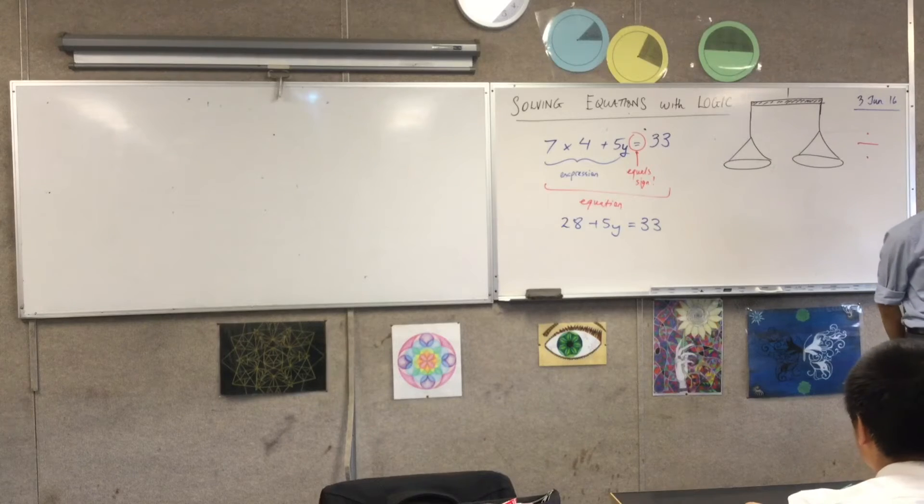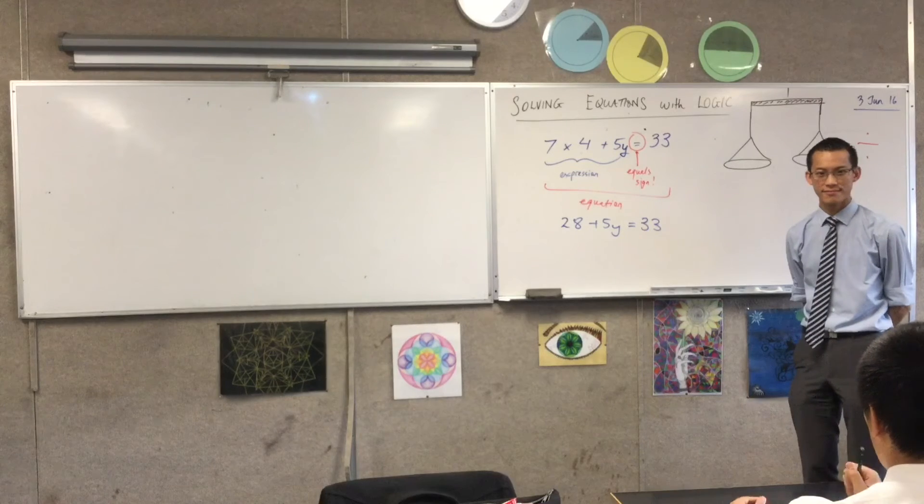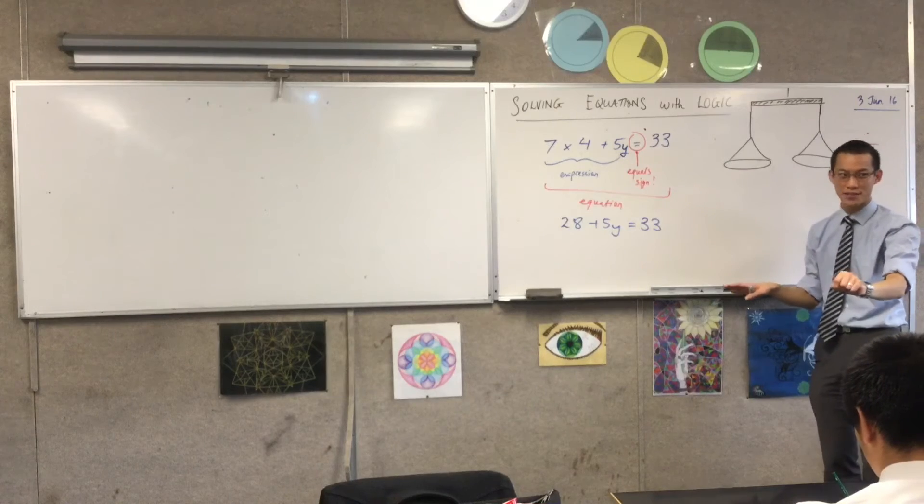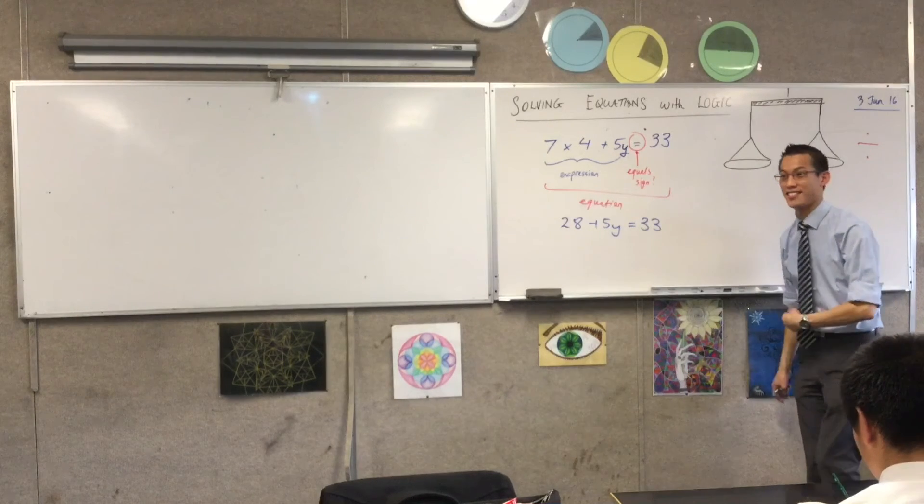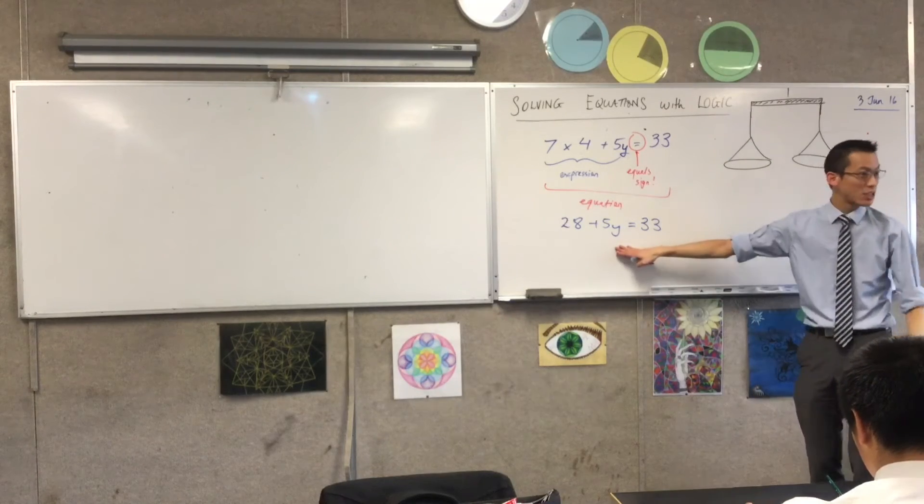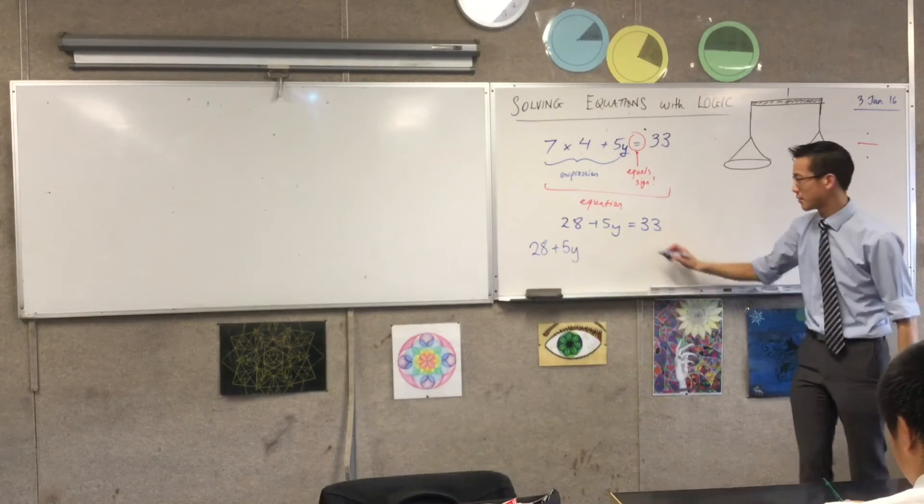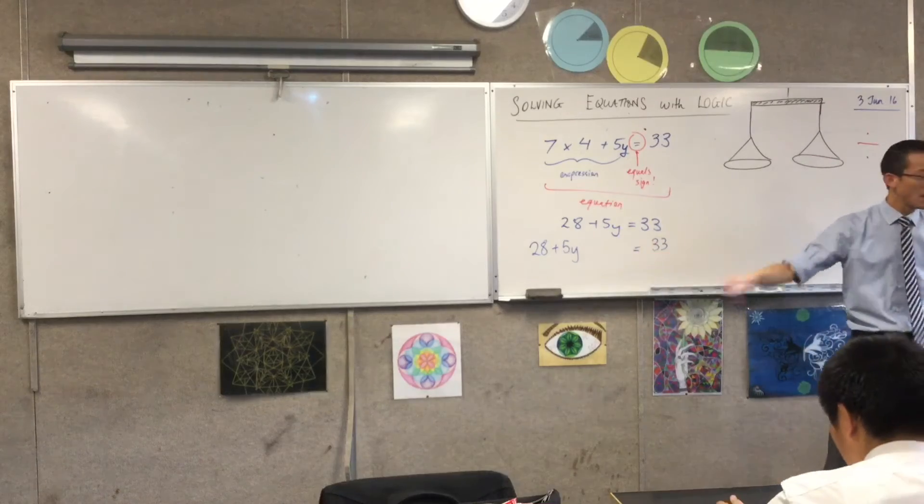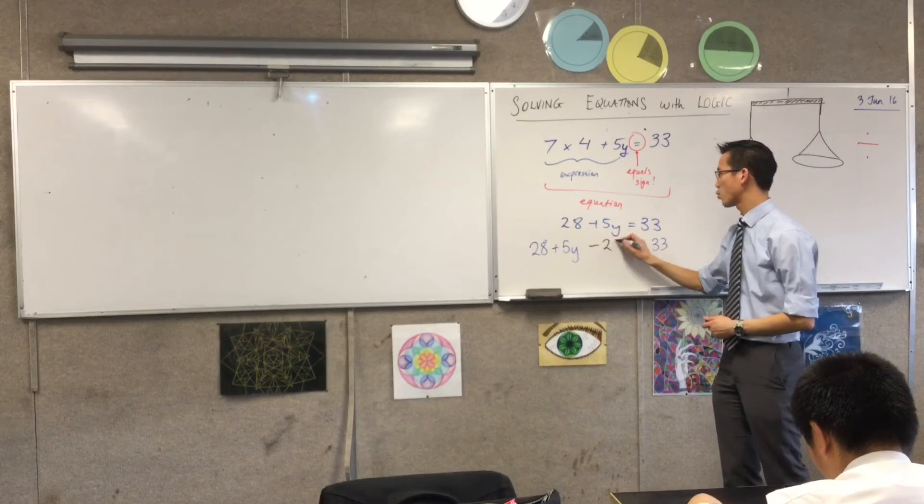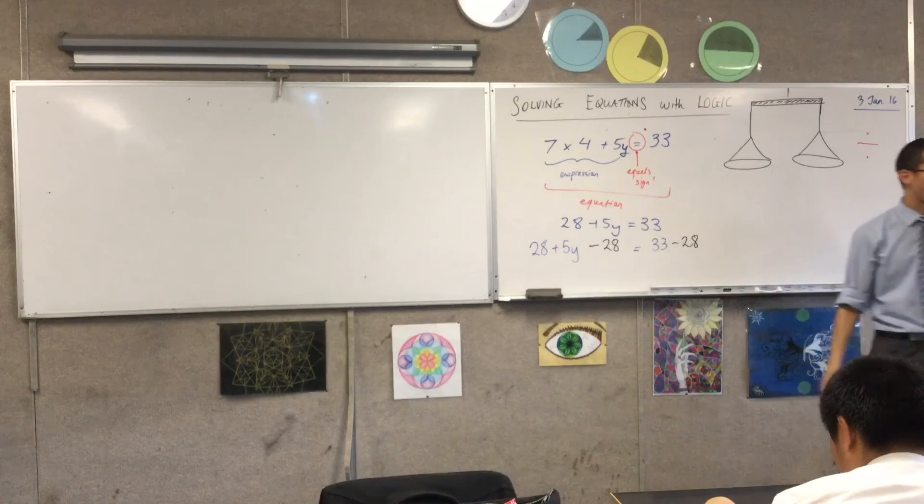What could I subtract from both sides? Any suggestions? You can minus 28 from both sides. I could subtract 28 from both sides. That would be great. In fact, on the next line, let's all write that. This is what's already there, 28 plus 5y, and there's already a 33, but I've left a space so that if you have another color, this would be lovely if you could put this in a different color. I'm going to subtract 28 from this side, which means I have to subtract 28 from this side.